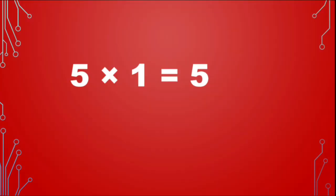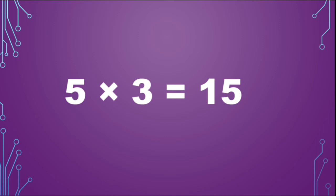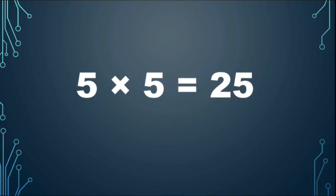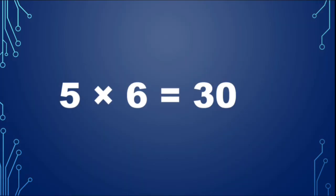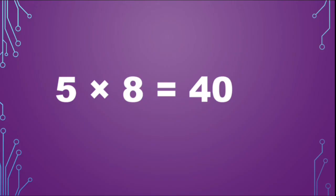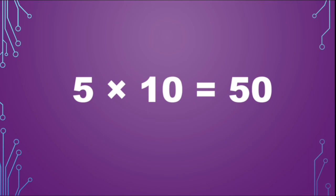Table of 5. 5 1s are 5, 5 2s are 10, 5 3s are 15, 5 4s are 20, 5 5s are 25, 5 6s are 30, 5 7s are 35, 5 8s are 40, 5 9s are 45, 5 10s are 50.